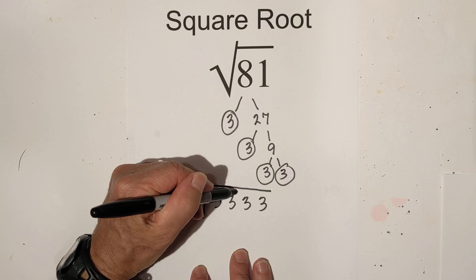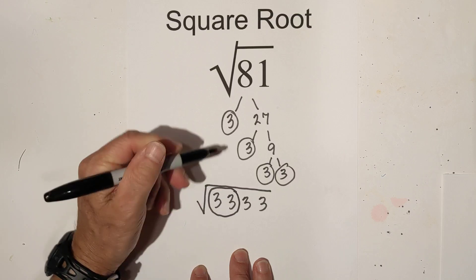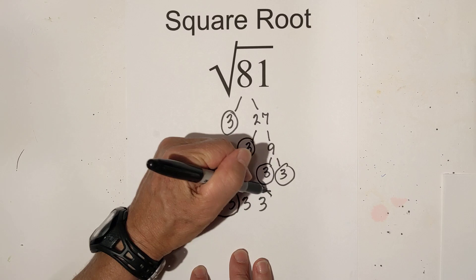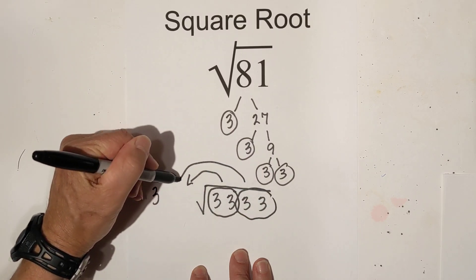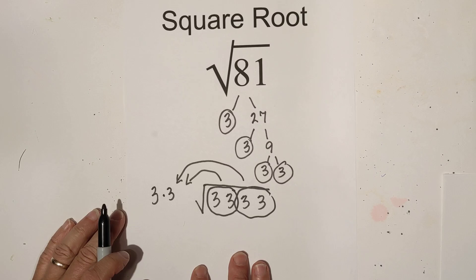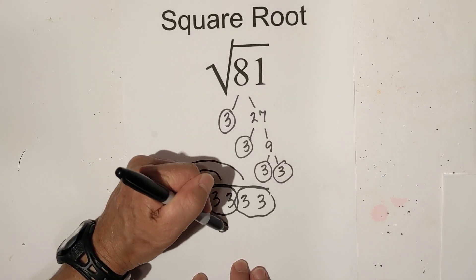We've got a pair of 3's here, so I'll pull them out and place them here. We've got another pair here, so it becomes 3 times 3, and 3 times 3 is 9.